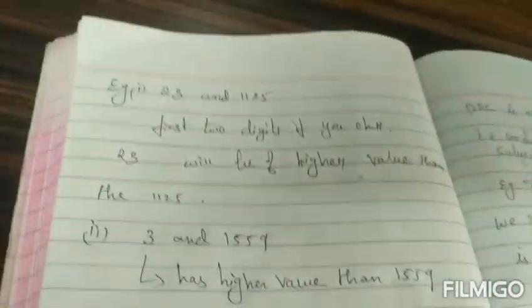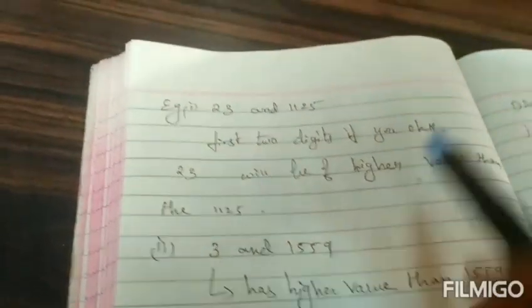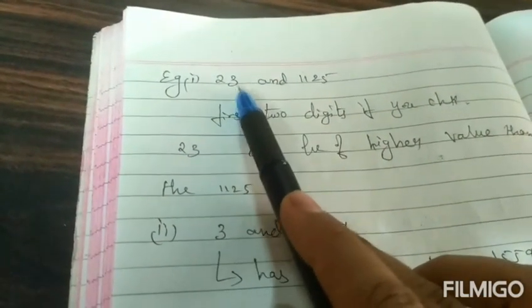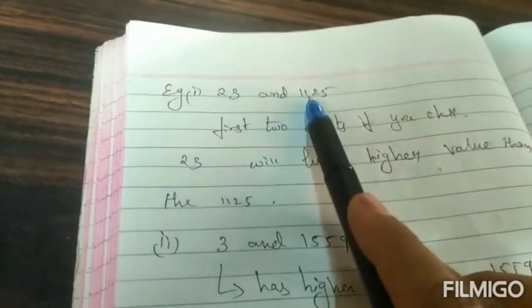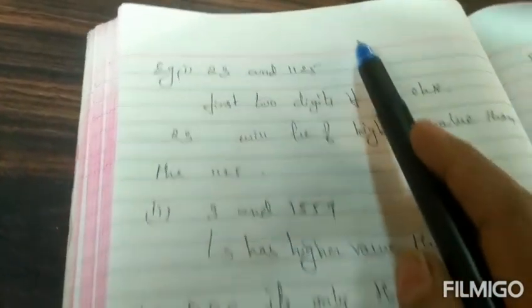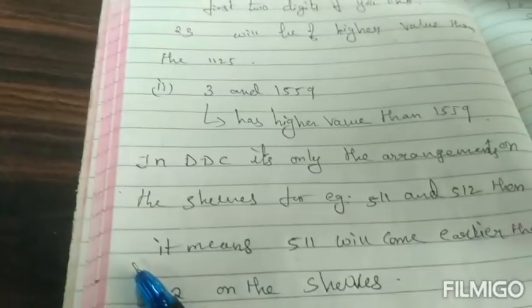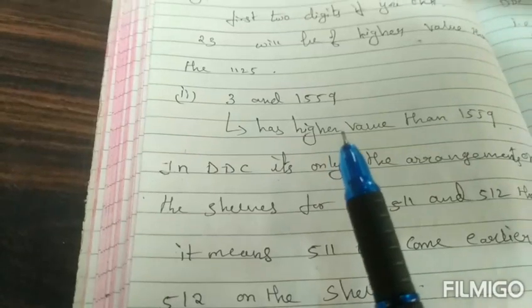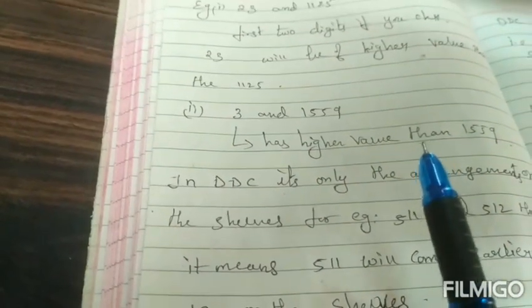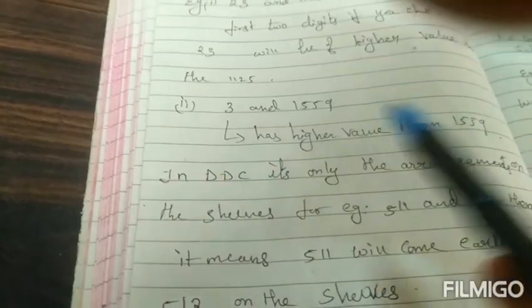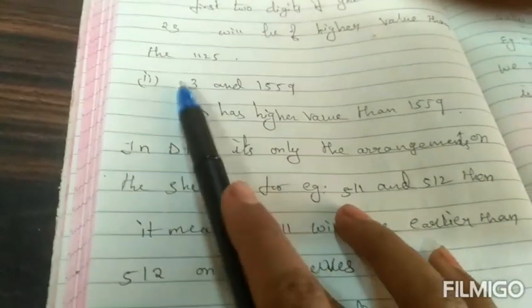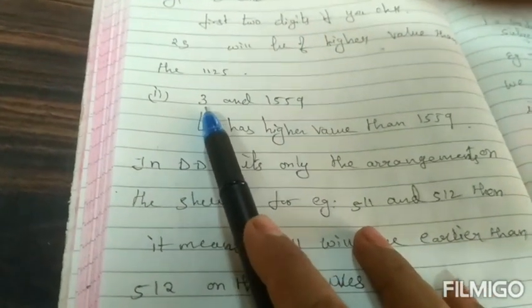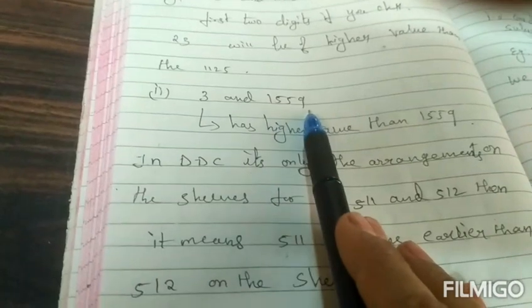Another example is 23 and 1142. Here you can see which comes first and which comes next. Only the first two digits we need to consider, so 23 will come first before 1124 in the shelf arrangement. You need never see it in terms of the higher values, but in terms of the notation means how the books are arranged on the shelf. As usual, 3 will be arranged before 1559 because the place value of 3 is higher than 1559.